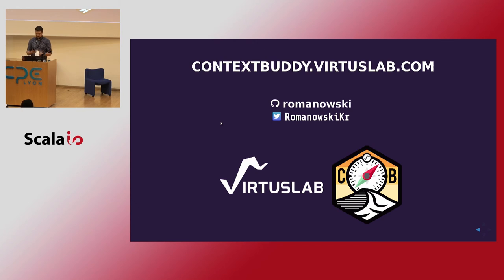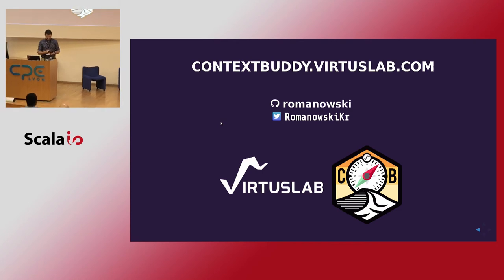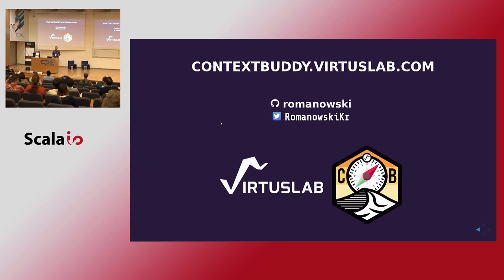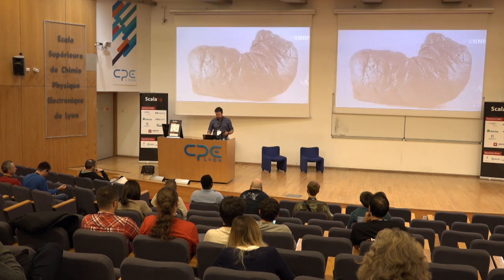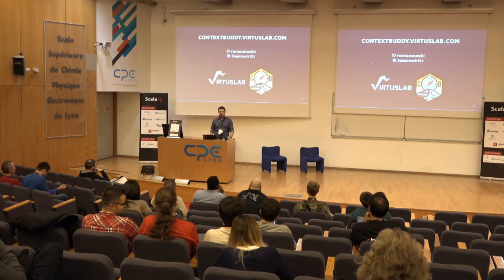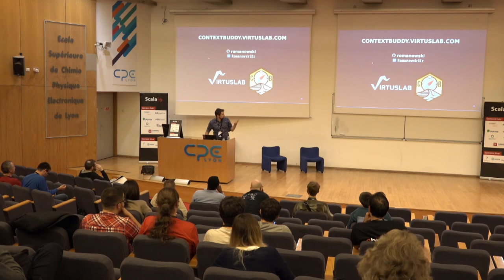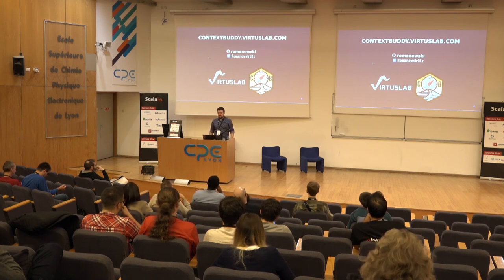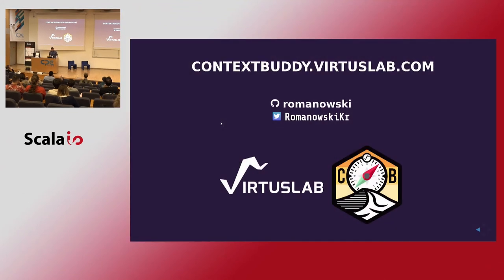Now it's time for questions. Is ContextBuddy a free tool? The smart history feature is open and you can use it. For the symbols and everything else, I'm pretty sure it will be free as well for open source projects. We plan to make it a commercial tool, but basic features will remain free. It's free right now.